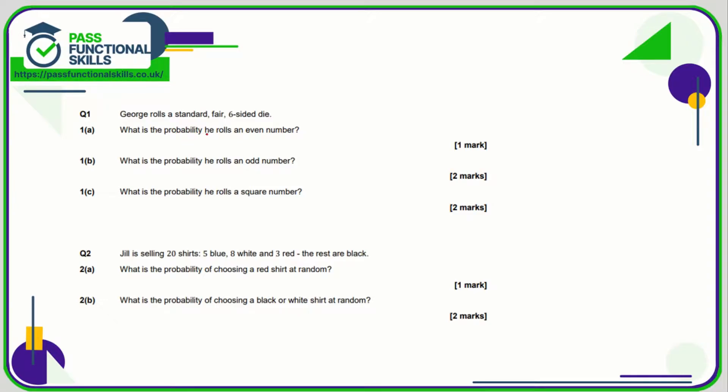So George rolls a standard fair six-sided die. What's the probability he rolls an even number? Well we have the numbers one, two, three, four, five, and six. So of them, three are even.